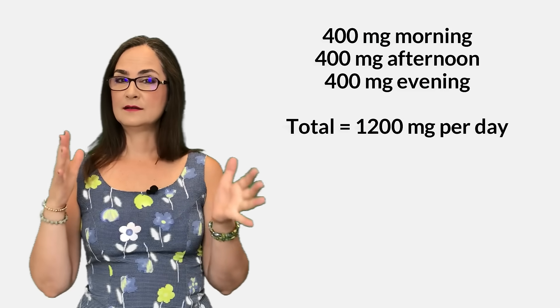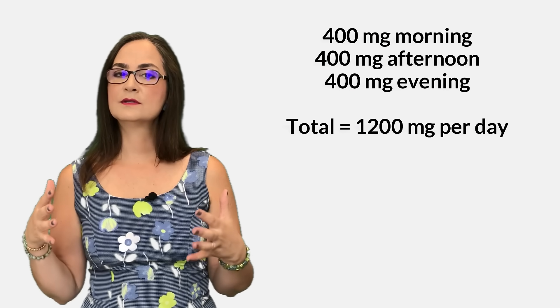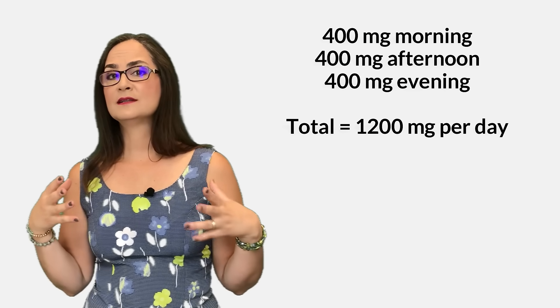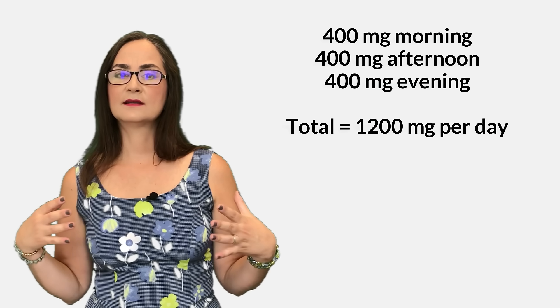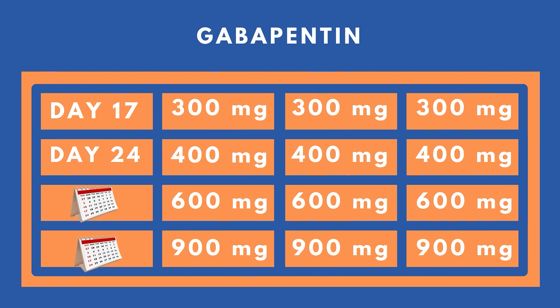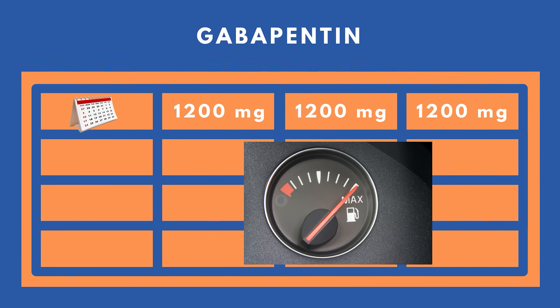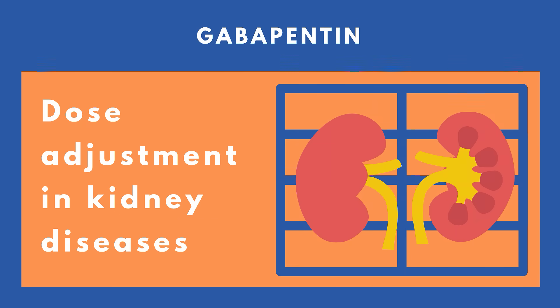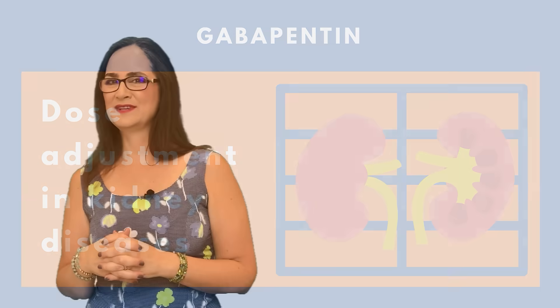When the person is taking 1200 mg a day, we evaluate if the pain is better. If pain is relieved by at least 30%, we keep the dose at 1200 mg a day. If the person can tolerate the adverse effects, we may increase to 1800 mg, in some cases to 2700 mg, and rarely to the maximum dose of 3600 mg a day. Most people respond to 1200 mg and do not need a dose increase. In people with kidney disease, this dose must be decreased and adjusted according to renal function.